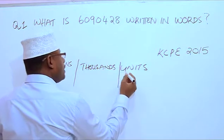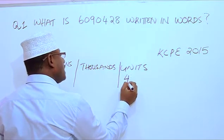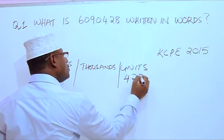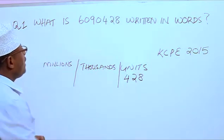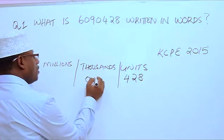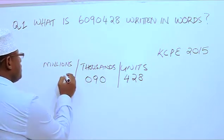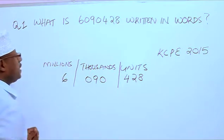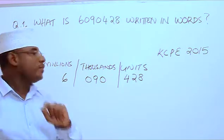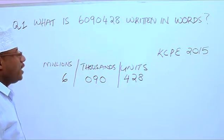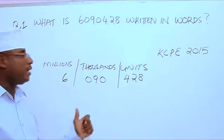Now let us put our number into the place value table. The last three digits are 428, followed by 090, followed by 6. Now it is very easy for us to read this number and write it in words.